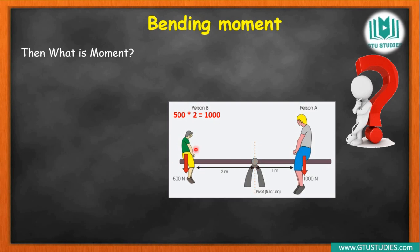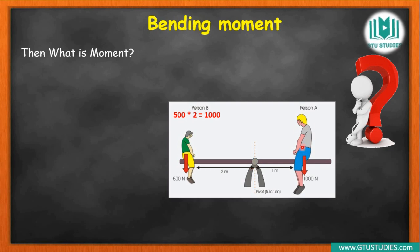Let us see how moment is generated. Moment is always created due to a force applied at a distance from the pivot point. The force multiplied by the distance from the pivot gives us the moment at that point.